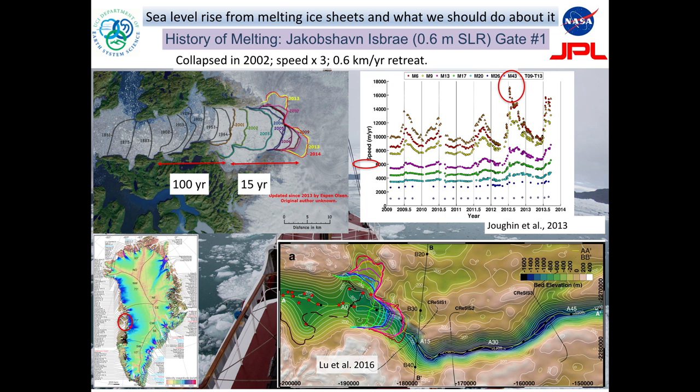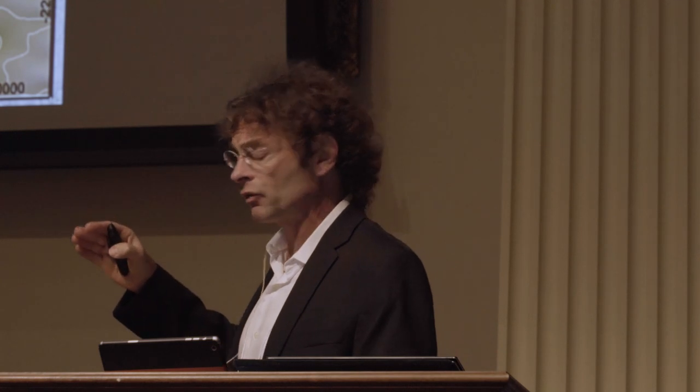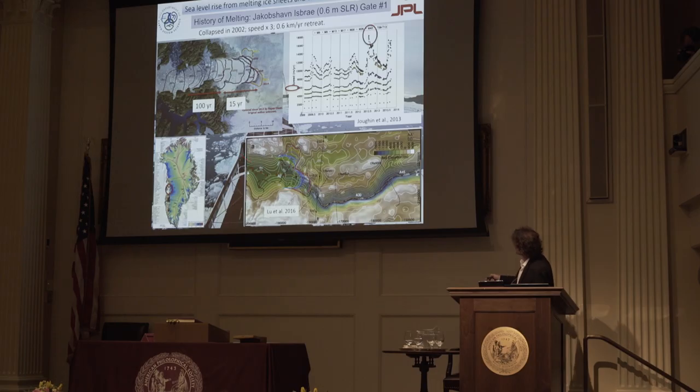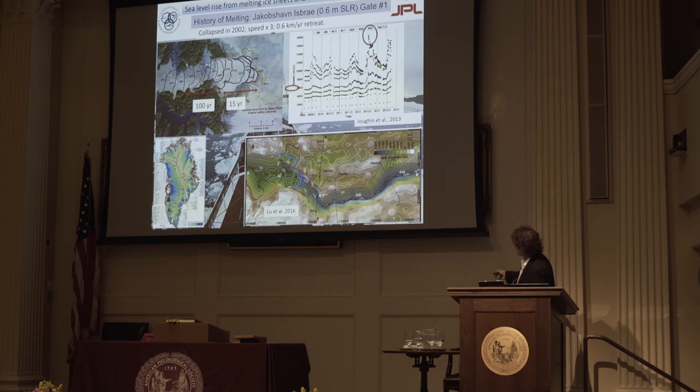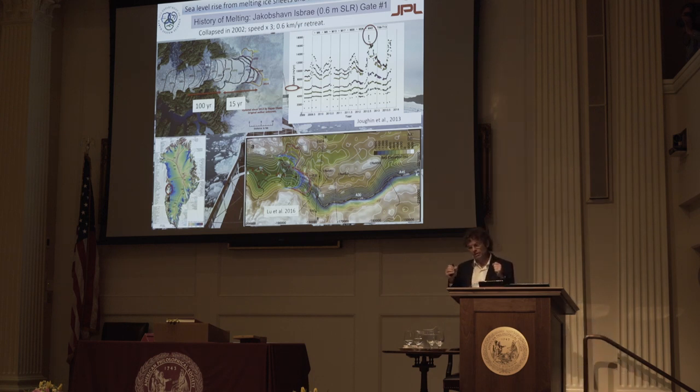Jakobshavn retreated at a certain rate for 100 years — about 15 kilometers — and this is what it did in the last 15 years: it lost its floating ice shelf, the glacier sped up by a factor of two, and in 2012 during a record melt year it was flowing at 18 kilometers per year — three times faster than the equilibrium rate. This glacier is flowing down a deep corridor equivalent to the Grand Canyon with a retrograde slope, retreating at half a kilometer per year. You will not find any glacier in alpine landscapes or in Alaska retreating at a rate of half a kilometer per year.